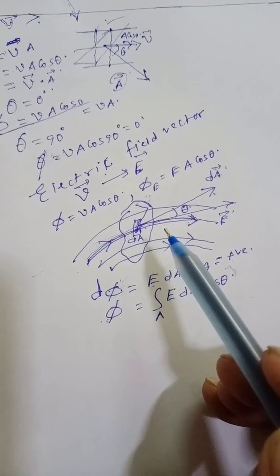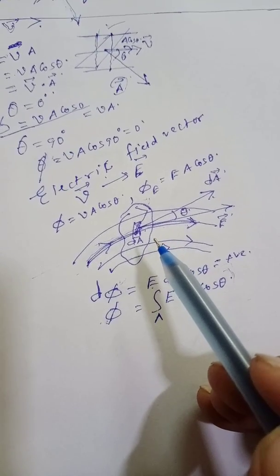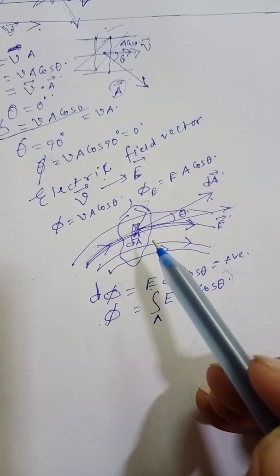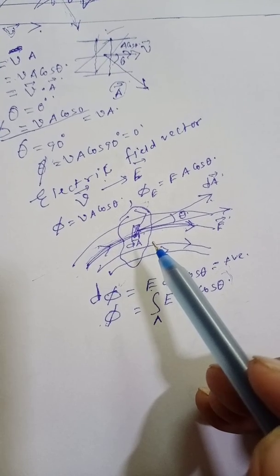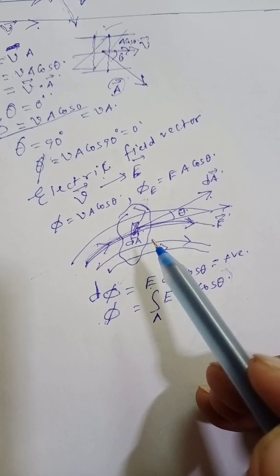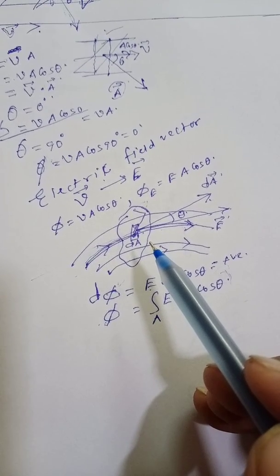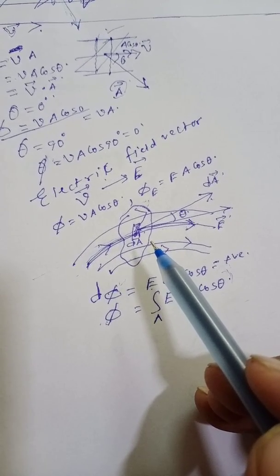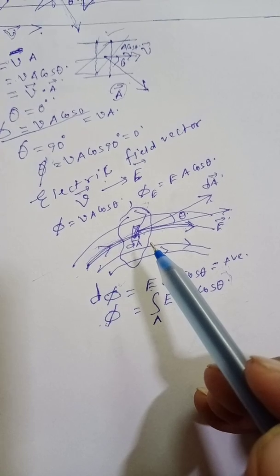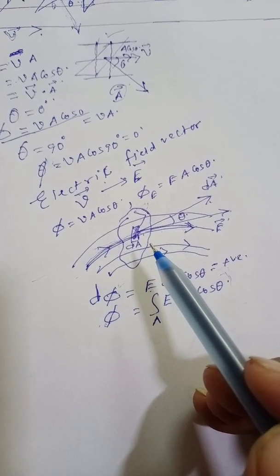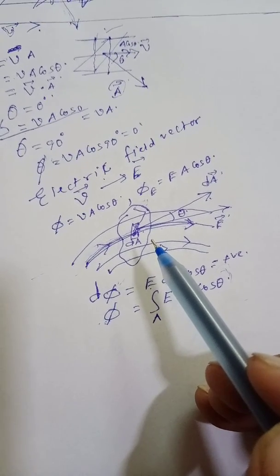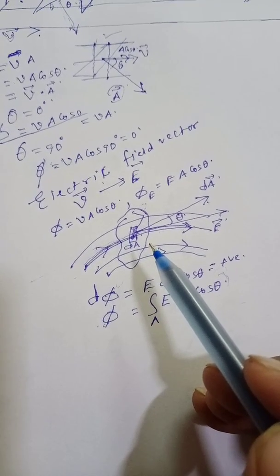Remember, electric flux is a measure of the number of lines of force passing through some surface held in the electric field. Now let us consider the case of a closed surface — that is, a surface that completely encloses a volume, like the surface of a balloon.